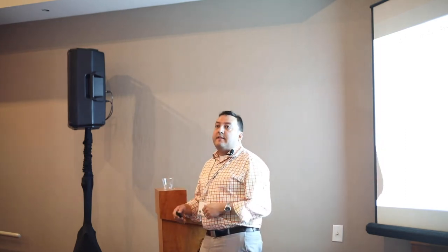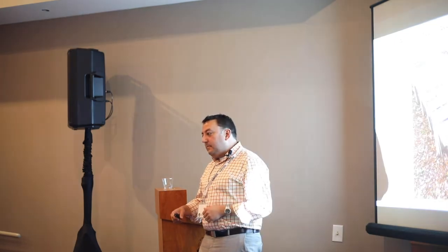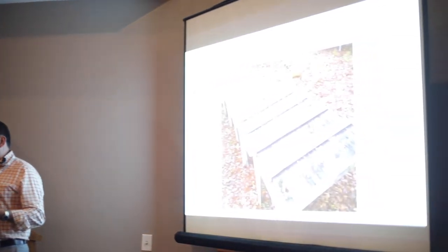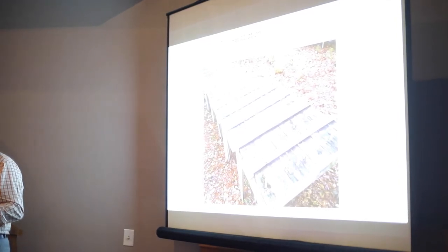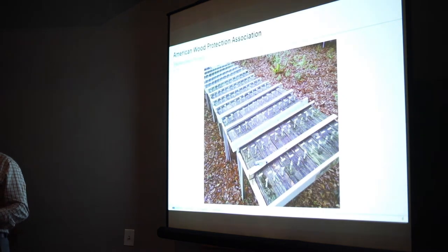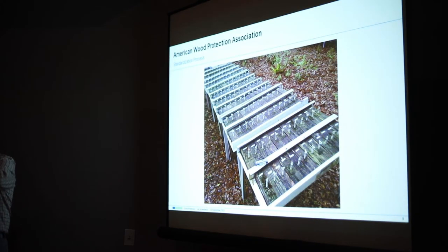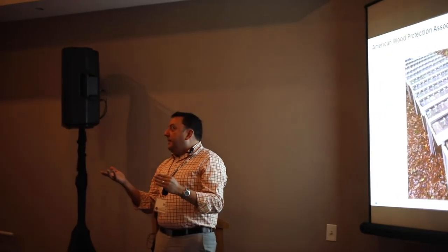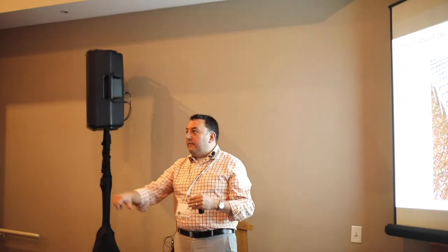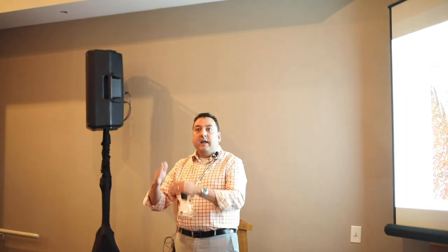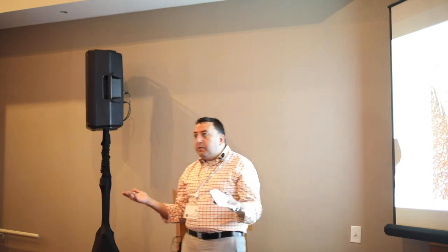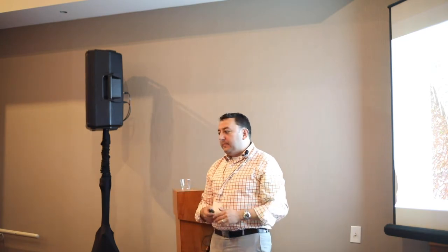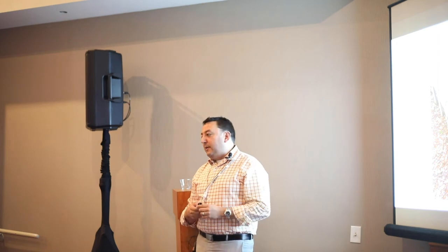The primary above-ground test is the horizontal lap joint test. It's two pieces of wood with a small joint created between them, bolted together. Every year the bolt is undone to evaluate decay inside the joint — simulating a deck handrail joint where water, debris, and dirt collect, which is where decay risk is highest. We submit that data annually to AWPA to get an approved retention.